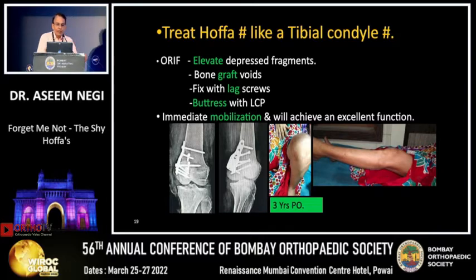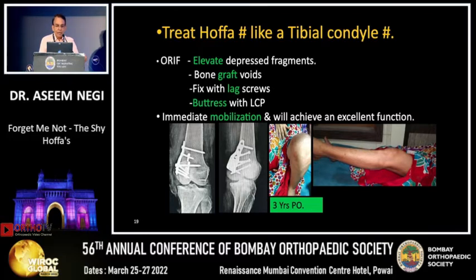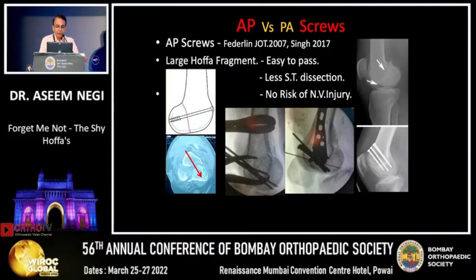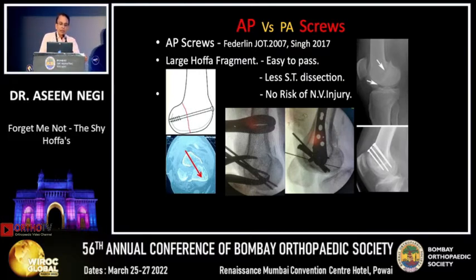Three years down the line this elderly lady has become absolutely normal. My plea to you: treat Hoffa fractures like a tibial condyle — elevate, graft, lag, buttress, and mobilize on day one. If the Hoffa fragment is large, you can use AP screws, which are easy to pass, cause less soft tissue dissection, and carry no risk of neurovascular injury.